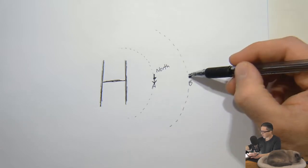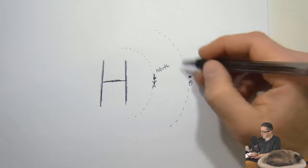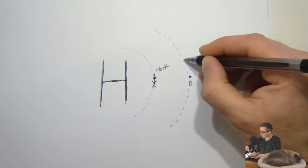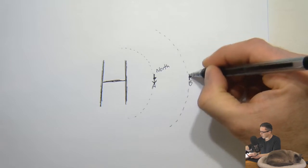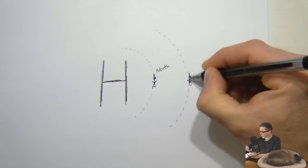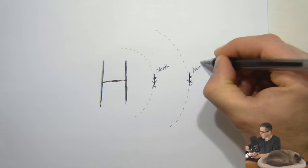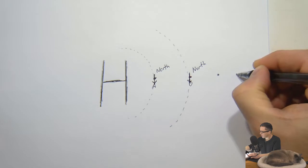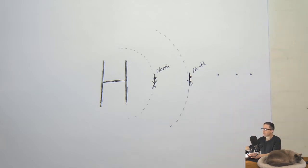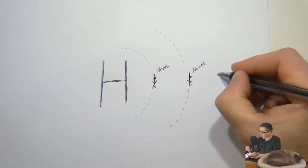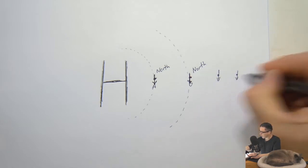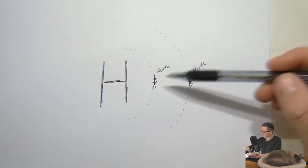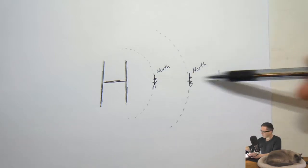What would the direction be at city B? Exactly the same thing, because you still have the circle coming around. This is a tangent to the circle at that point — also north. And in fact, any city along this line would have north winds. The difference might be the speed, but we're not trying to figure out the speed — all we can do here is figure out the direction.